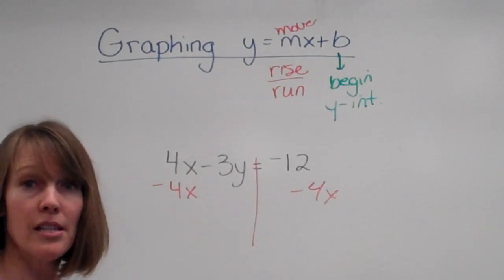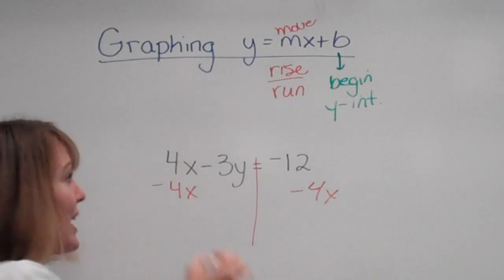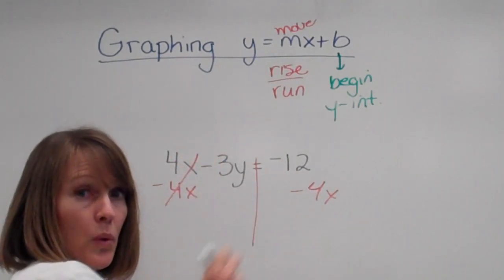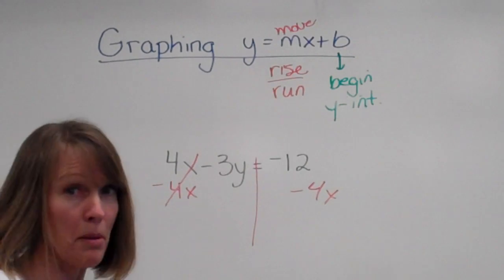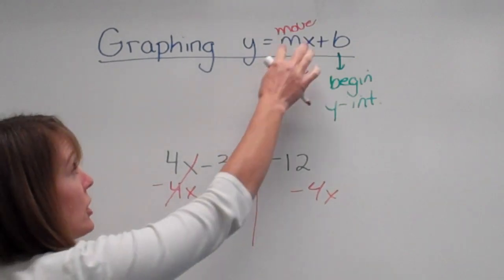Now, 4x's minus 4x's, that's 0x's. It goes away. Now, we cannot add a negative 12 and a negative 4x. That would be pink underwear. And we want it to look like this.